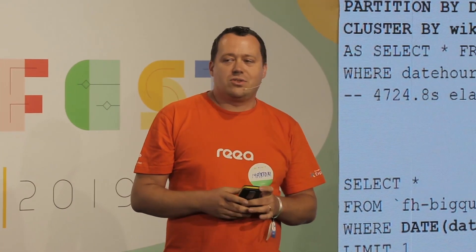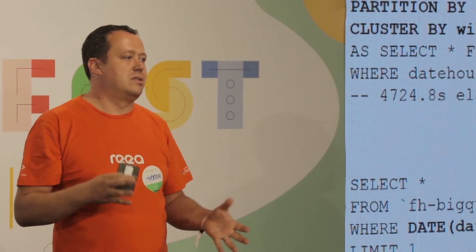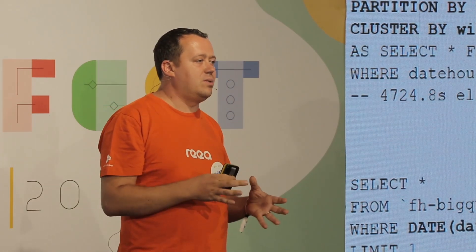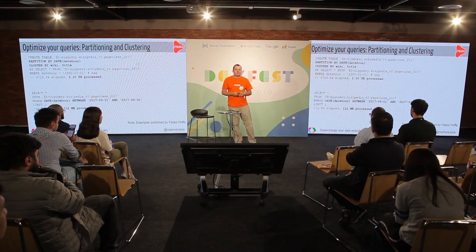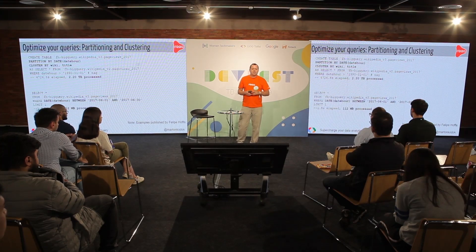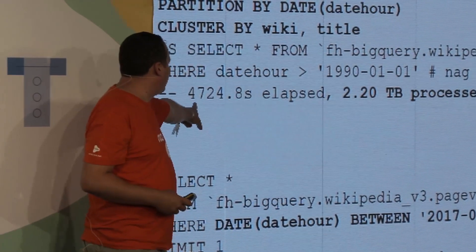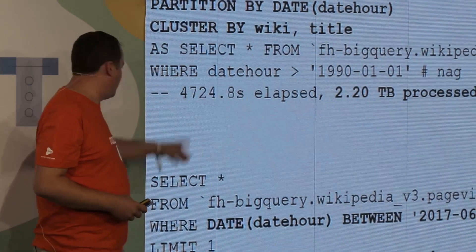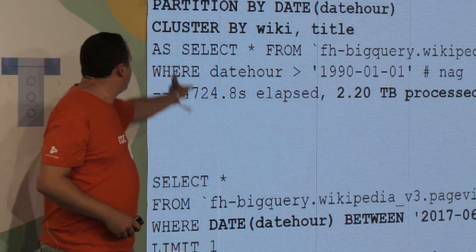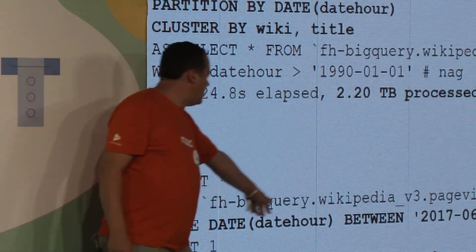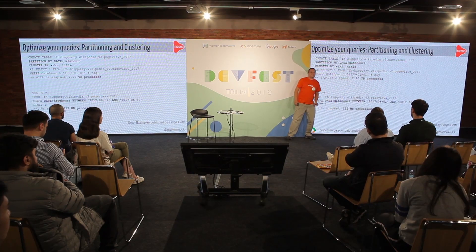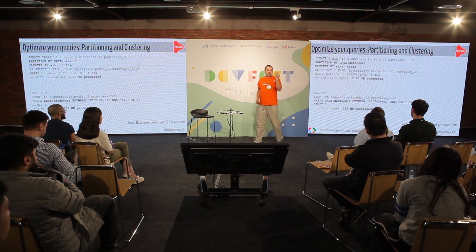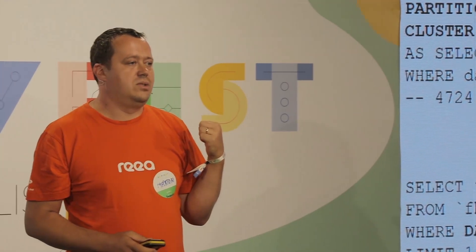BigQuery introduced partitioning and clustering in order to reduce data size and also to reduce costs. You create a table using PARTITION BY and CLUSTER BY. Without partitioning, 200 terabytes may be processed. When you use partitioning, it processes only megabytes of data — a fraction of the cost. This is one of the good benefits of using BigQuery.